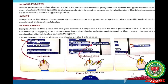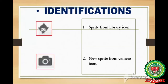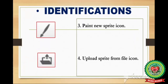Today I have completed the topic: components of the Scratch window. Let's go through the identifications. First identification is sprite from library icon, second is new sprite from camera icon, third is paint new sprite icon, and fourth is upload sprite from file icon.